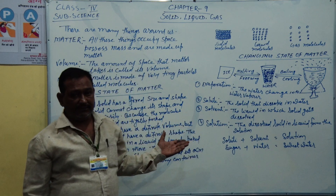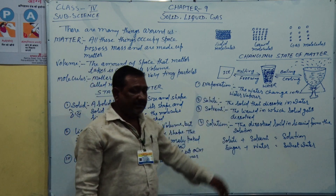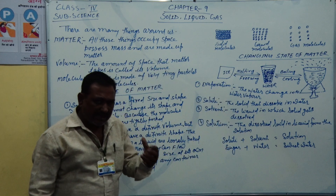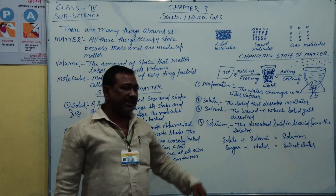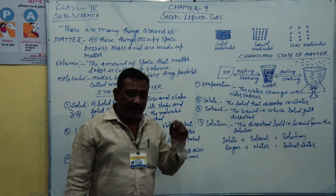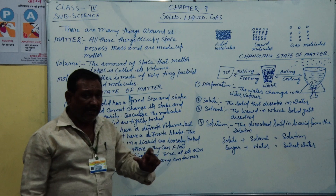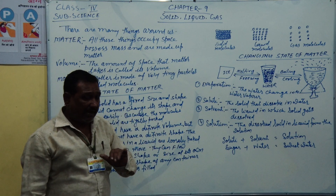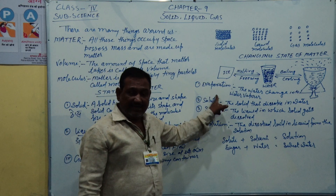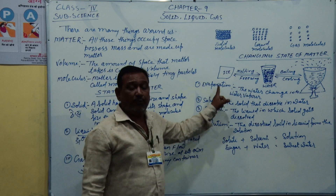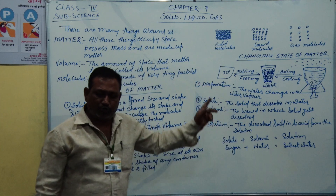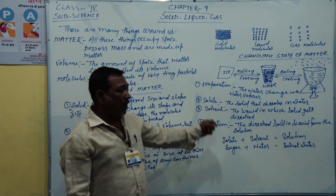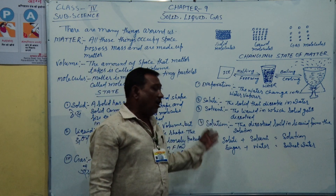Now evaporation — when water is heated, it turns into water vapour. When water is cooled, it turns into ice. When water is heated further, water vapour is formed. The process of water changing into water vapour is called evaporation. After that we have solvent and solution.